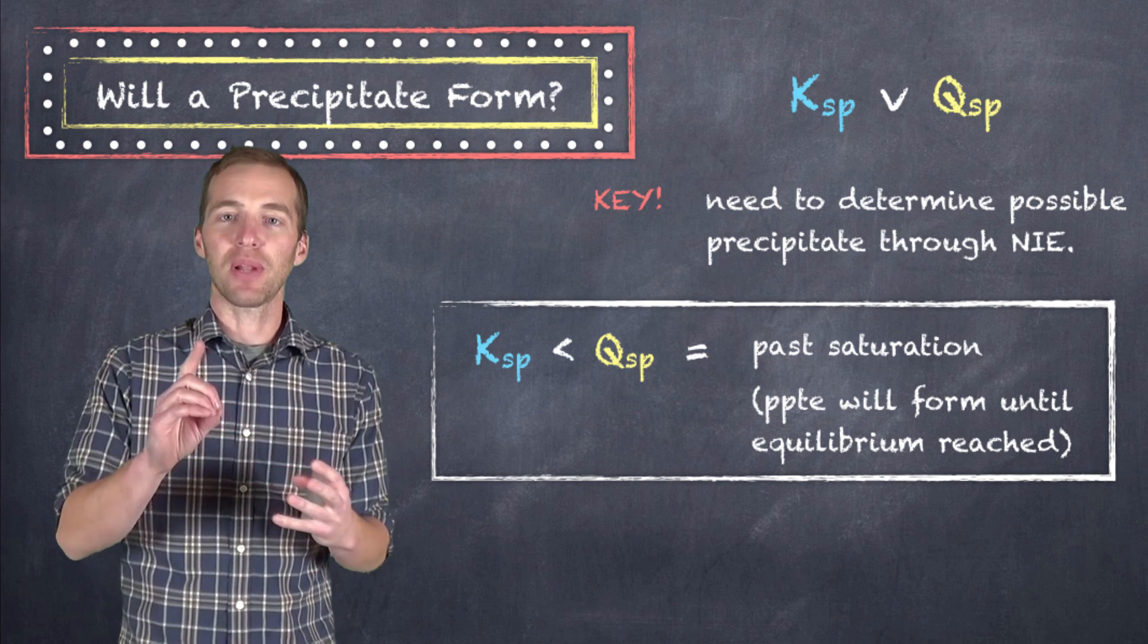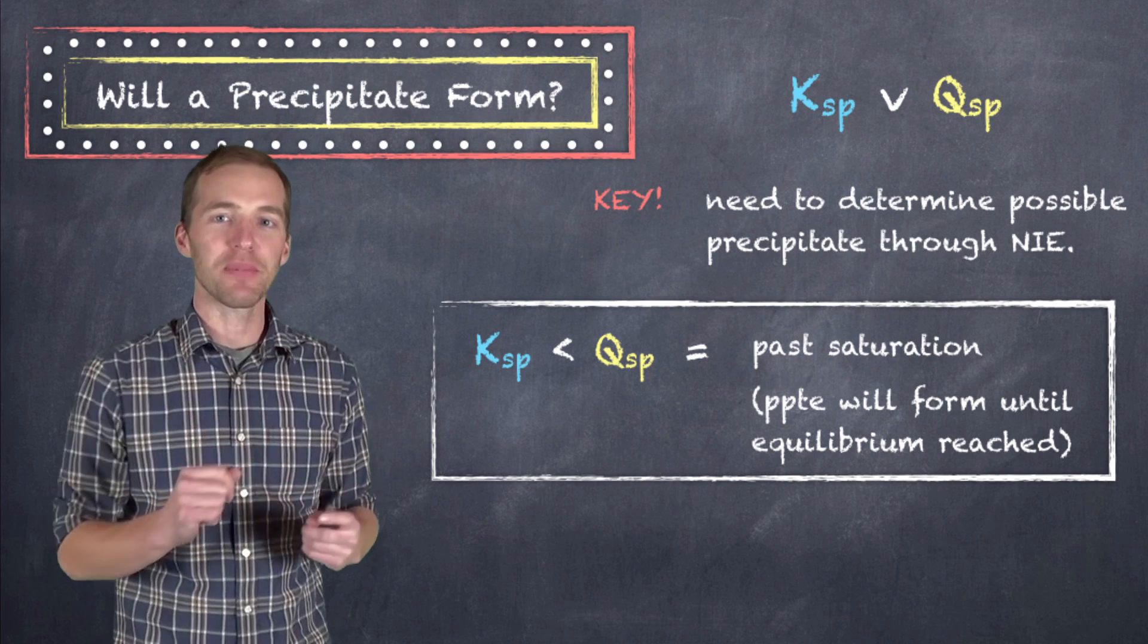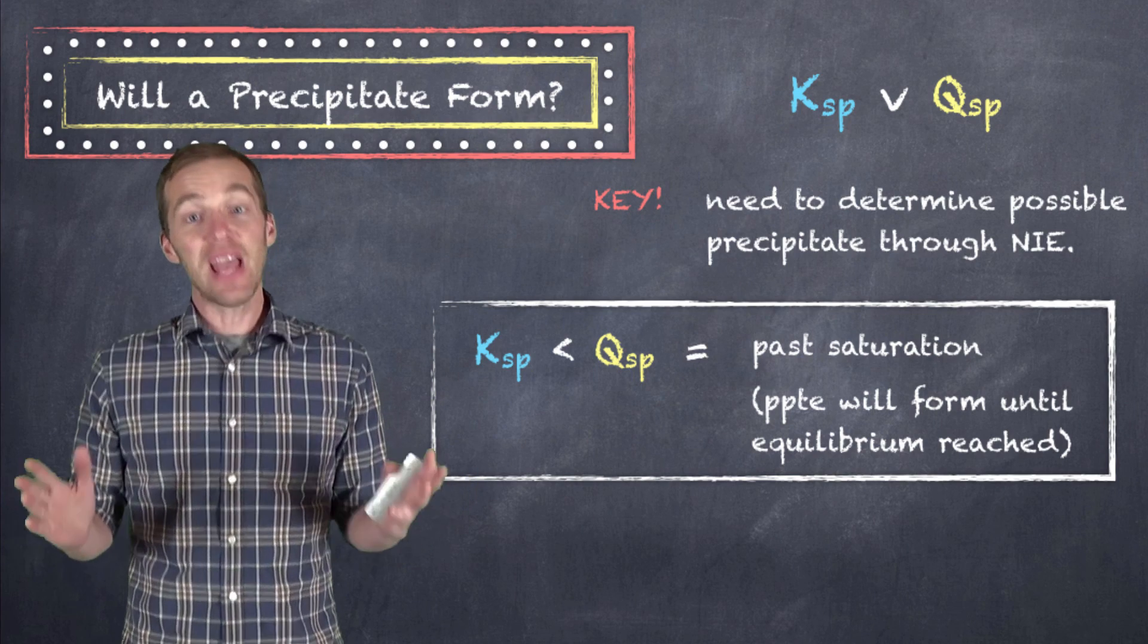So if you ever play a game of will a precipitate form, now you know how to win. And now you know why the White Cliffs of Dover aren't going to recede anytime soon. Thanks for watching.